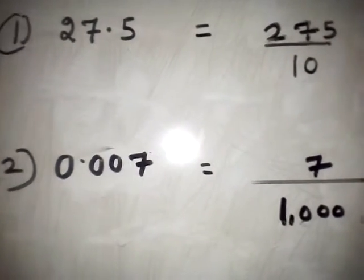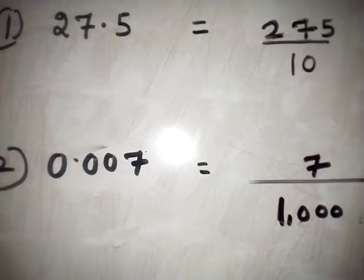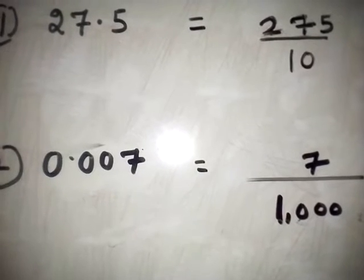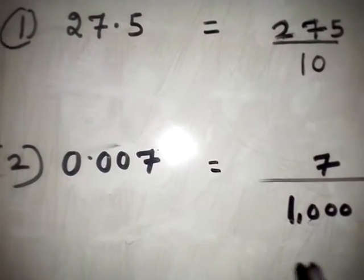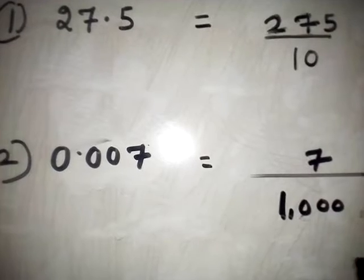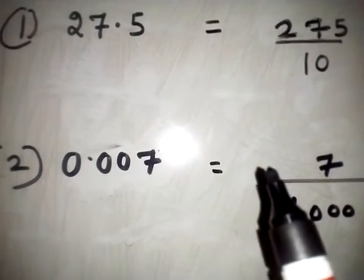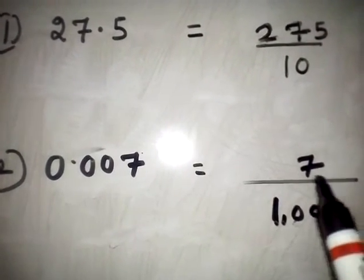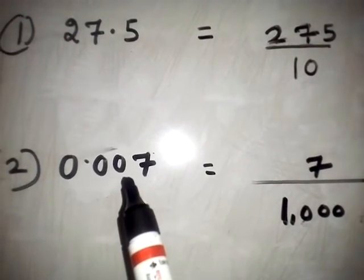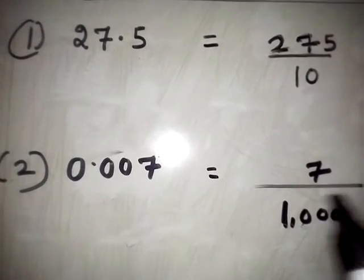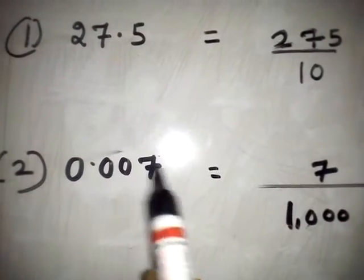You have to write in denominator form whether it is 10, 100, or 1000 — in the denominator, the place value. You have to count how many decimal places there are, and according to that you have to write the denominator. And without the decimal point, you have to write that number in the numerator — the given question number, without the decimal point, in the numerator.